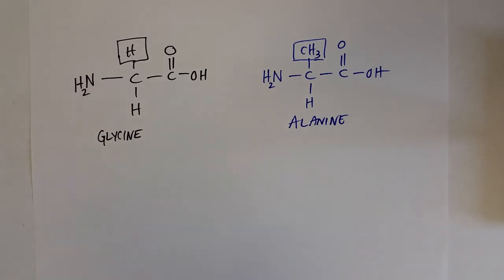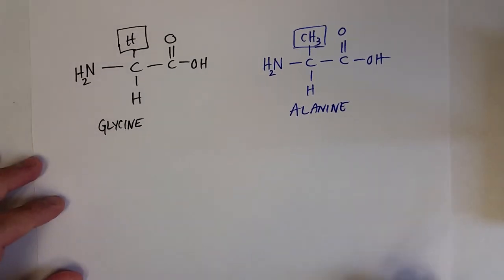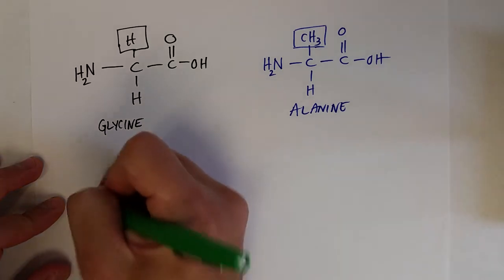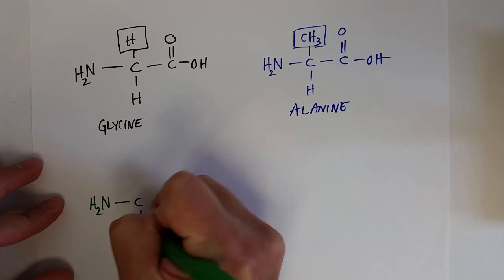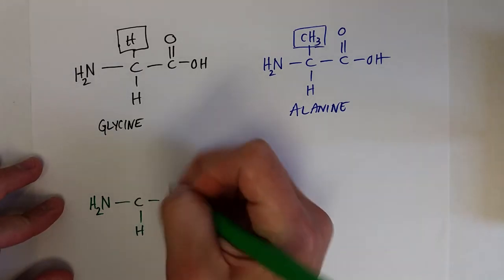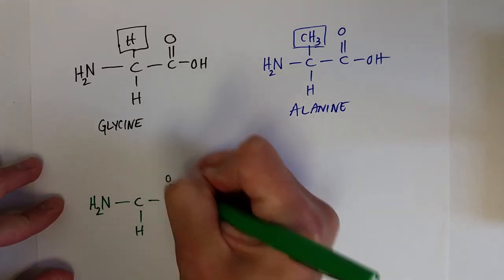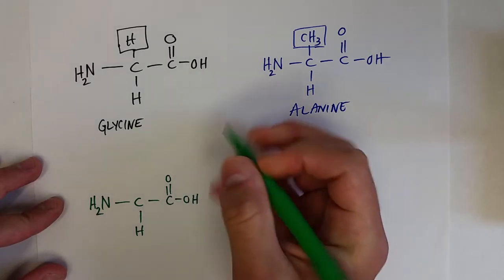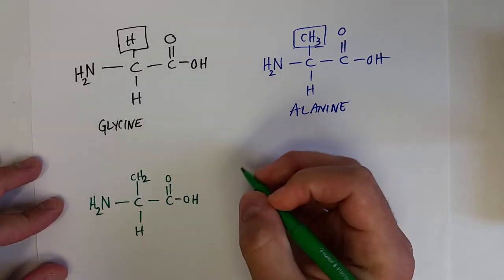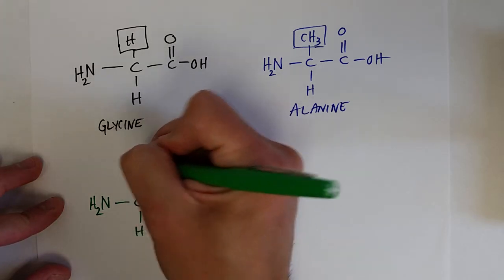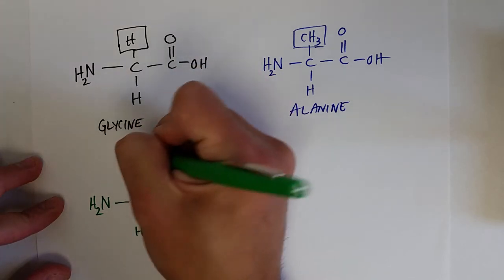So those are pretty simple R groups. They can get very complicated or more complicated. But here's one. If you think of the last time you ate turkey, if it was say for Thanksgiving or something, this gets a lot of publicity, this amino acid during that time. And this is tryptophan. And tryptophan has this structure.